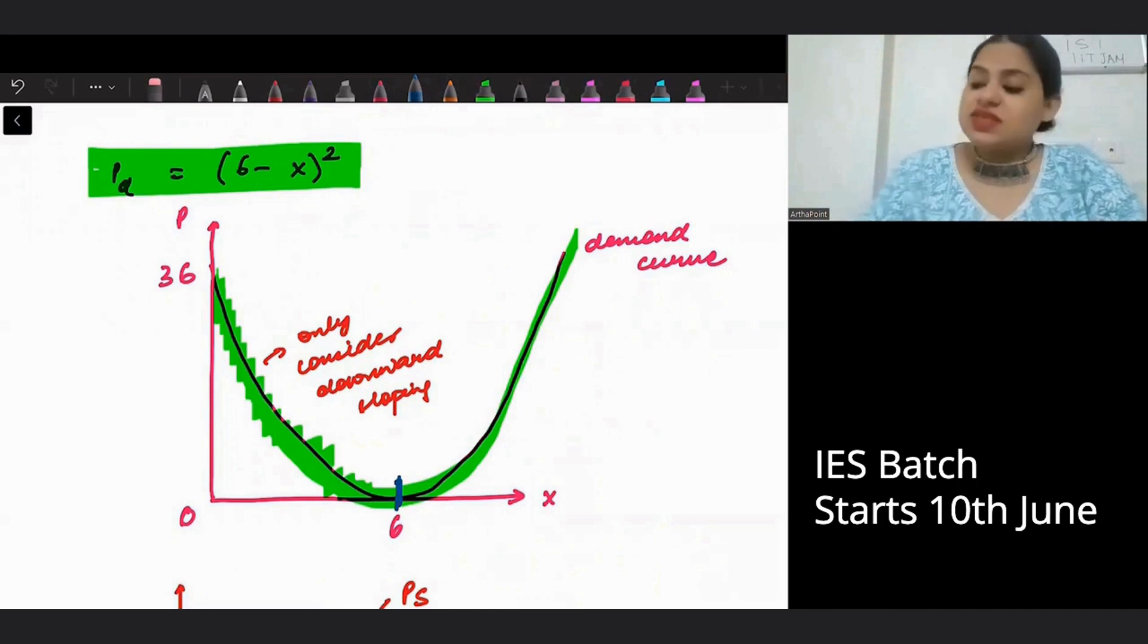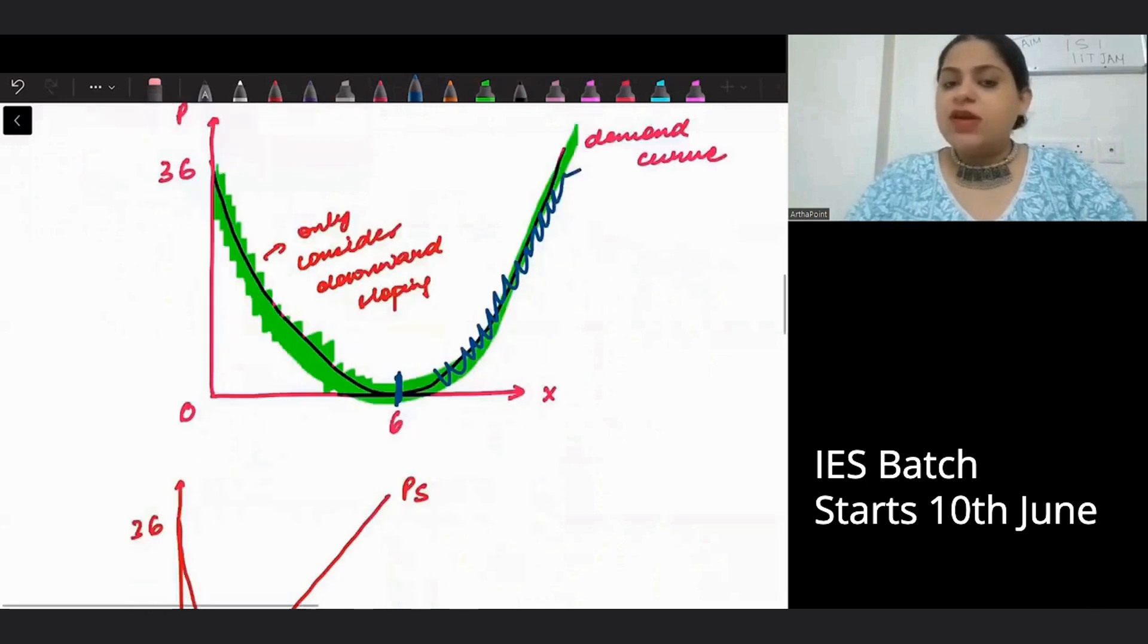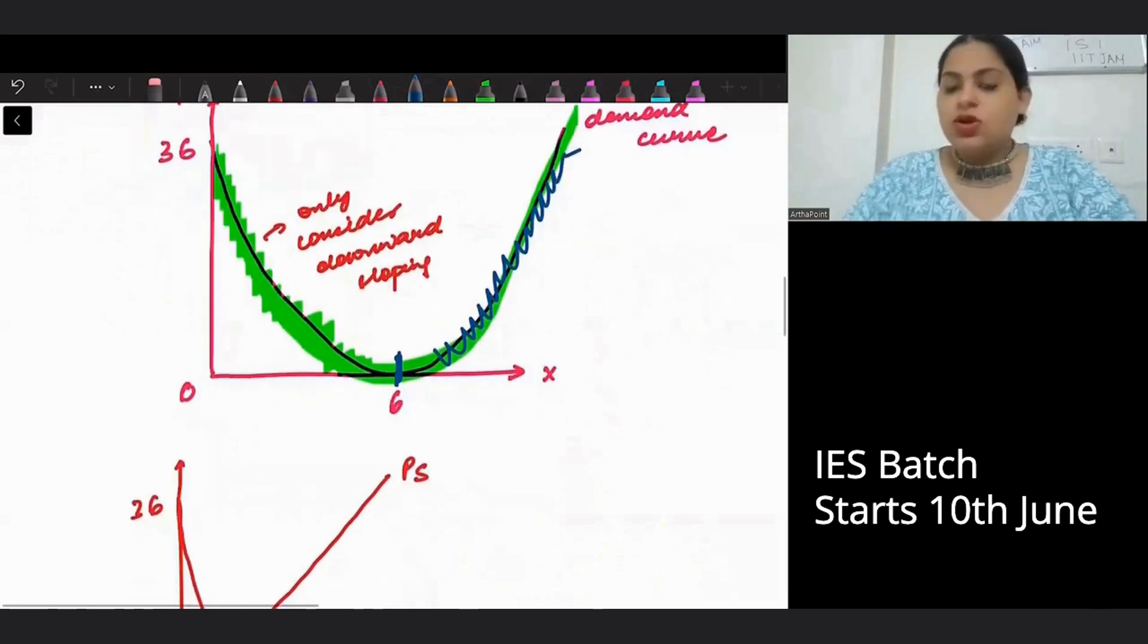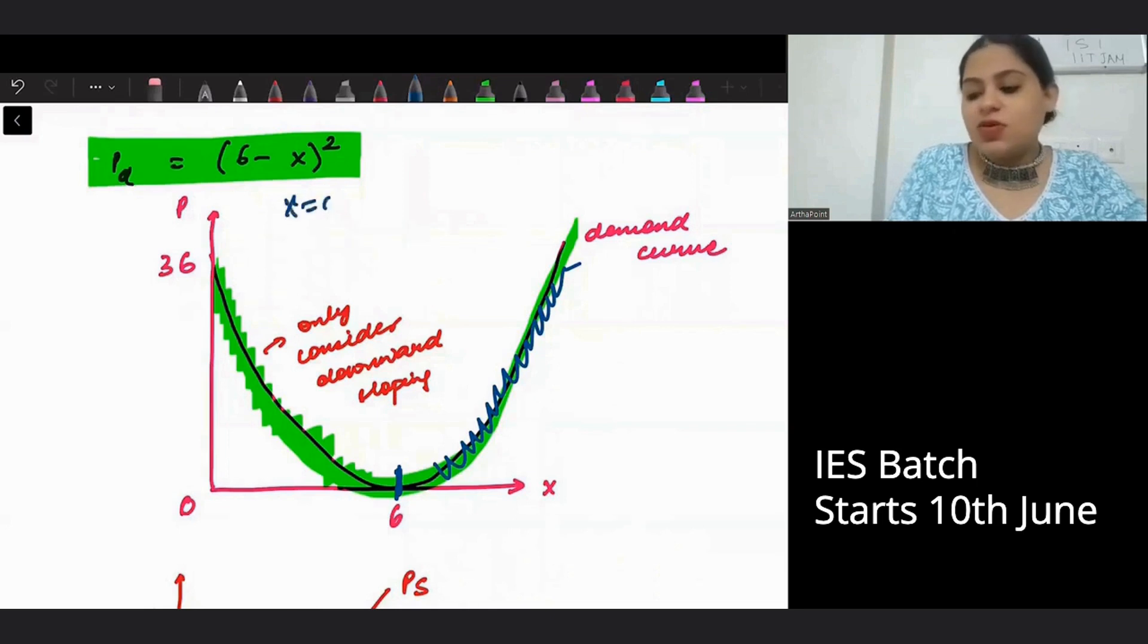Now, try and understand we are not concerned with the upwards sloping part of the demand curve. We are only concerned with the downwards sloping part of the demand curve. And that is what we will consider. So if you consider this point, what happens when x is 0? When you put x as 0, you get price as 36.